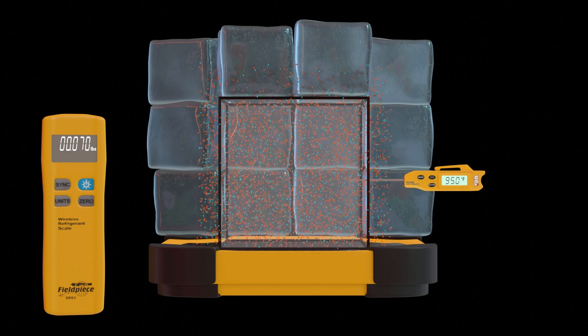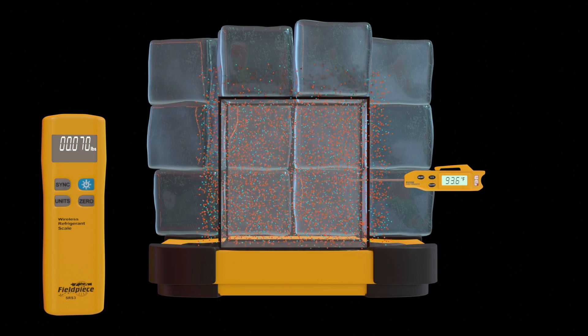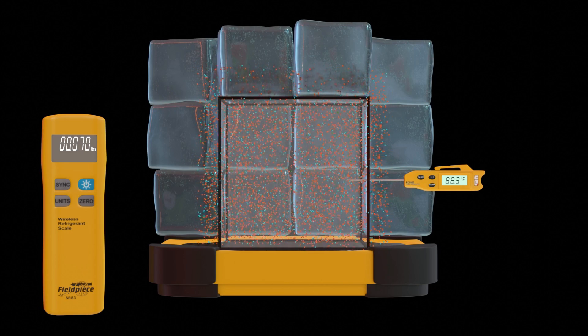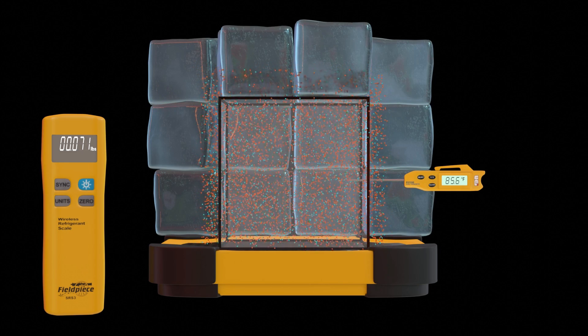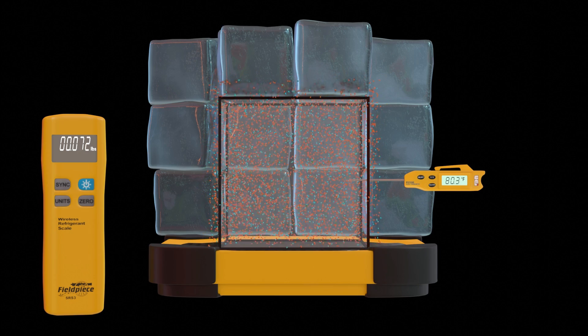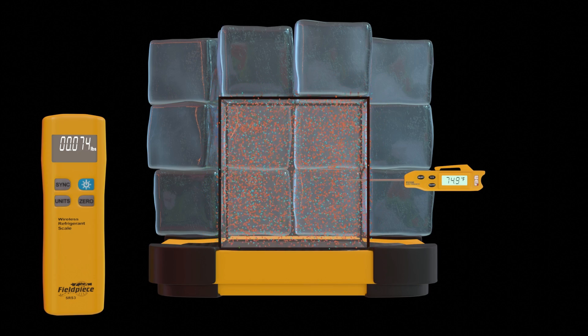When we remove heat from a given quantity of air, the molecules start to slow down and become more tightly packed together. This increases the weight of the air and causes the volume to shrink.